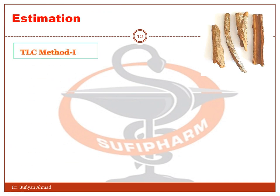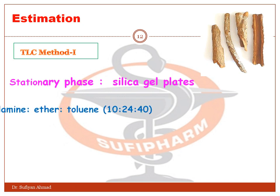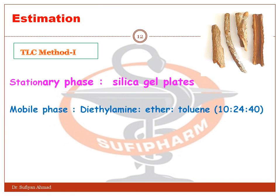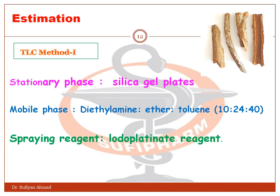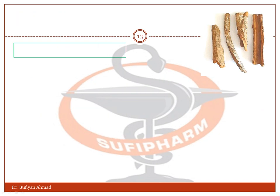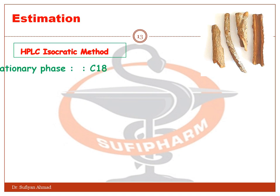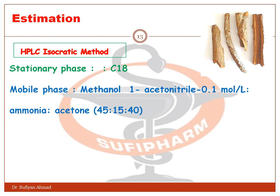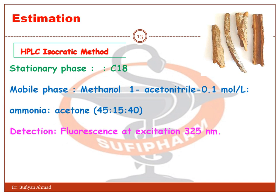Estimation by TLC method: stationary phase — silica gel plate; mobile phase — diethylamine 10 mL, ether 24 mL, and toluene 40 mL. The detecting agent is iodoplatinate reagent. Estimation by HPLC isocratic method: stationary phase — C18; mobile phase — methanol 45 mL, acetonitrile 15 mL, and acetone 40 mL.